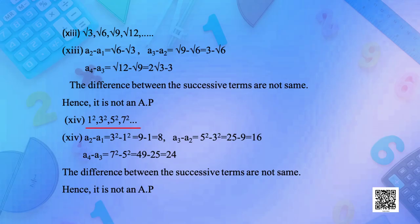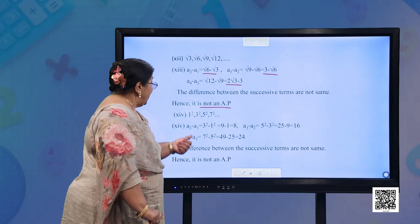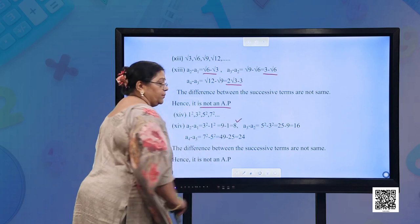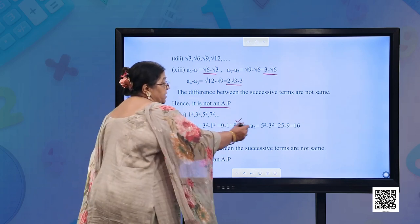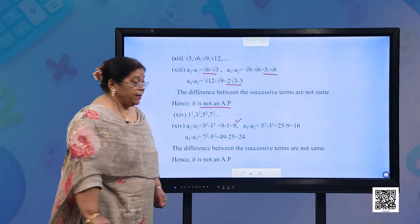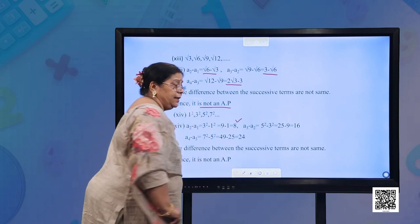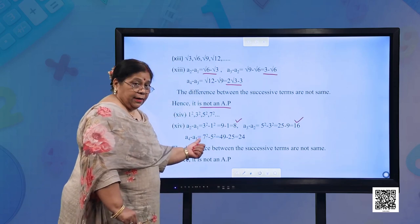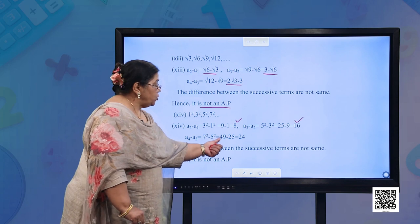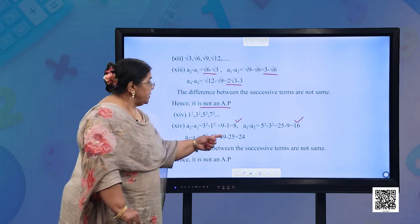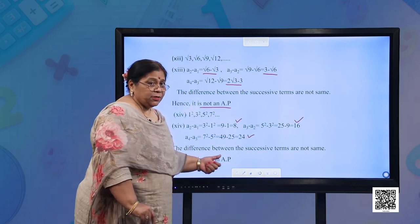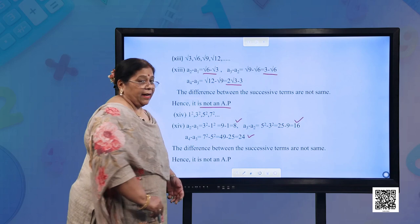Part (n): 1², 3², 5², 7² — that is 1, 9, 25, 49. A2 − A1 = 9 − 1 = 8; A3 − A2 = 25 − 9 = 16; A4 − A3 = 49 − 25 = 24. The differences are not the same. Therefore, it is not an AP.